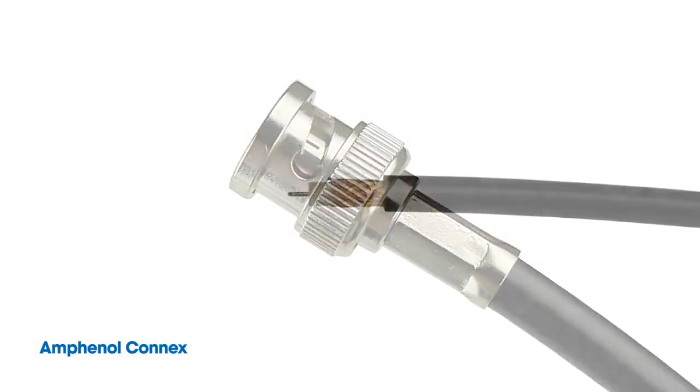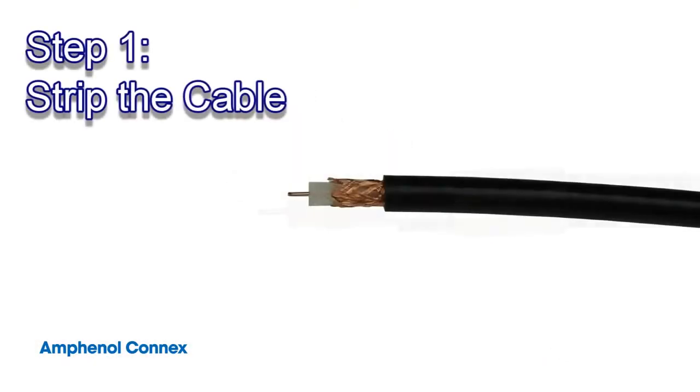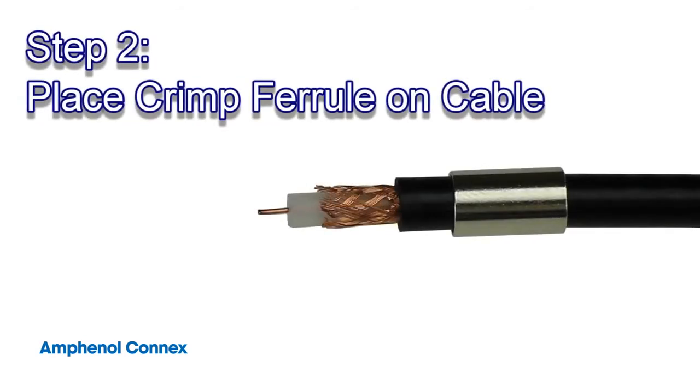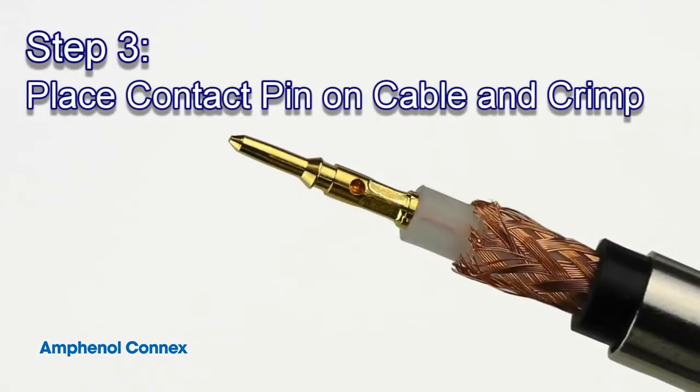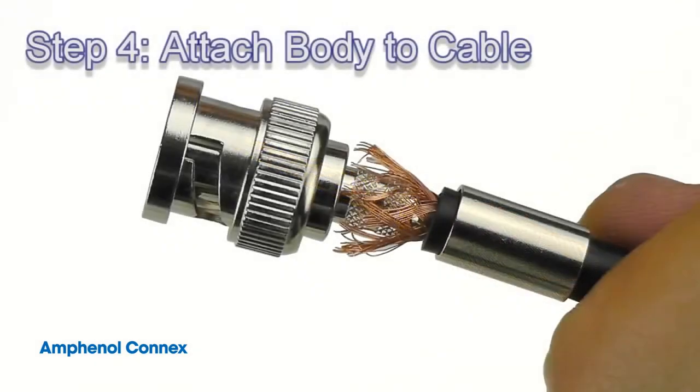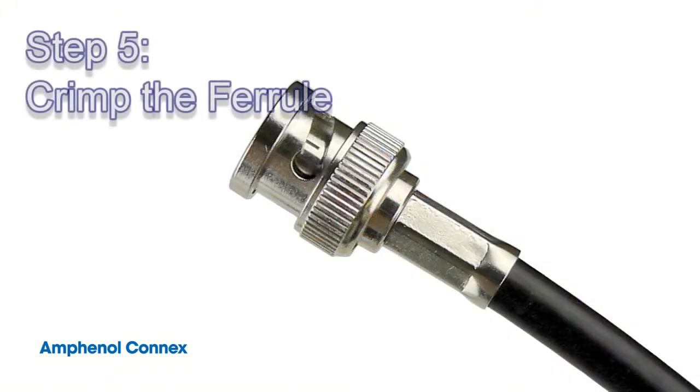Let's recap. Start by stripping the cable. Next, put the crimp ferrule on the cable. Now, attach and crimp the contact pin. Next, attach the body to the cable. Lastly, slide the ferrule up to the body and crimp.